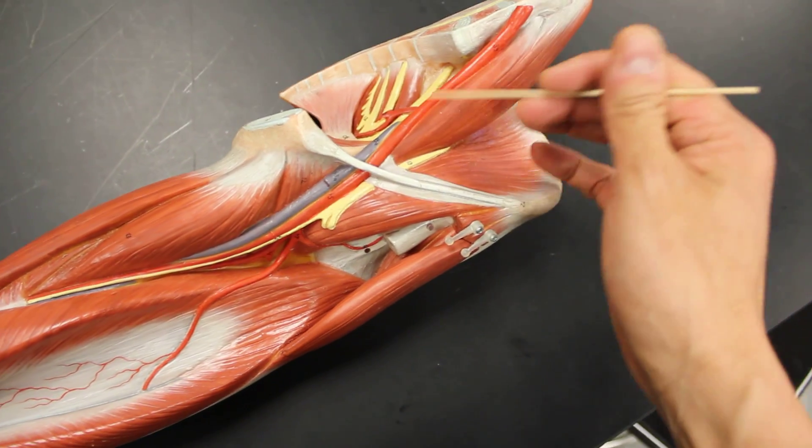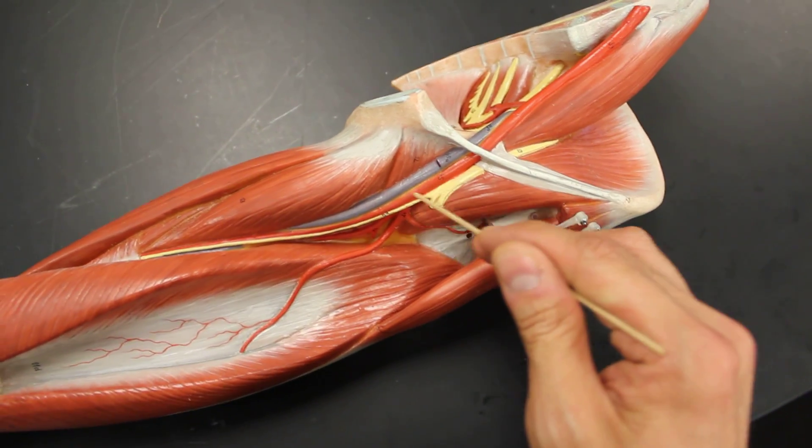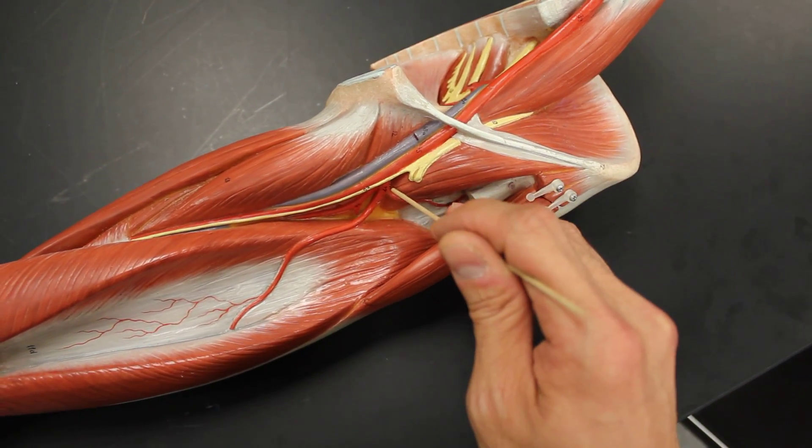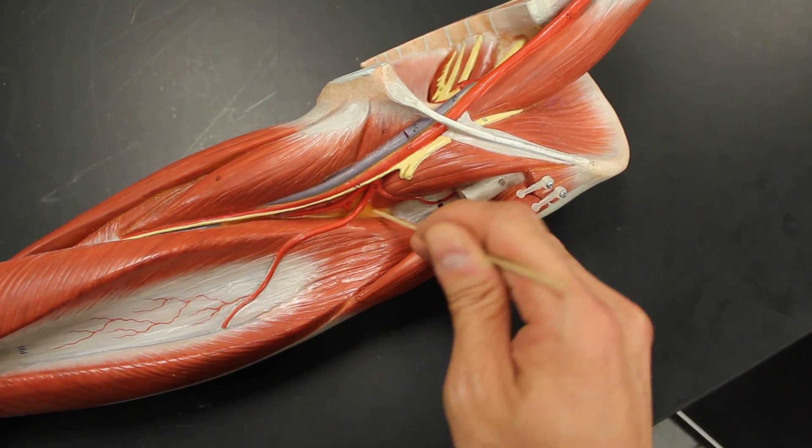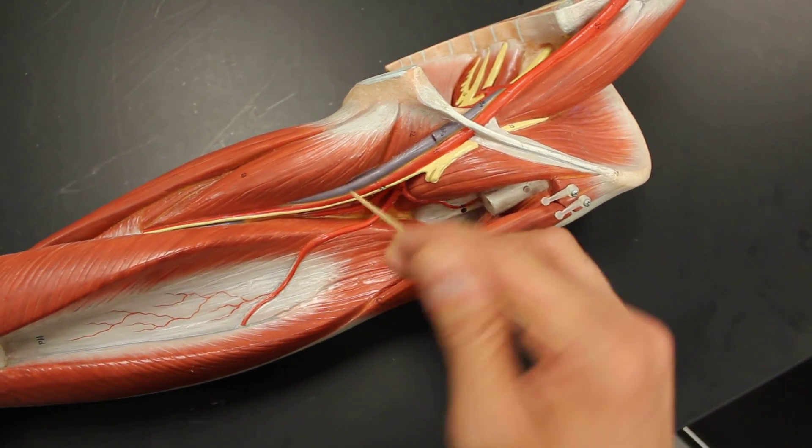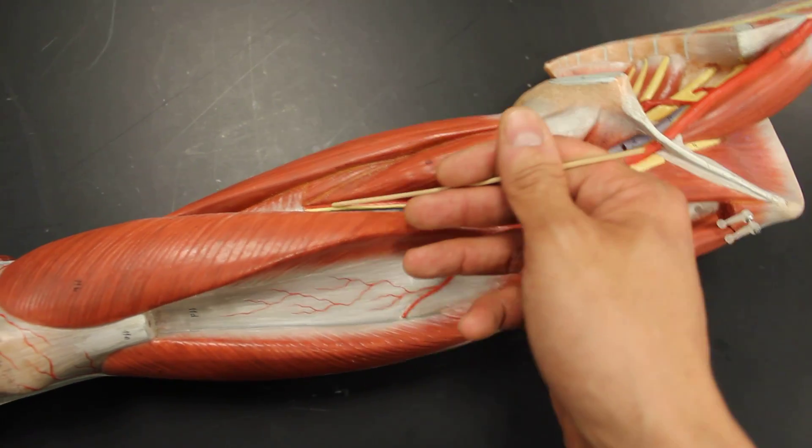Once we go into the external, once it crosses the inguinal ligament, it becomes the femoral. And the femoral gives us one big branch called the deep femoral. You can see some of the branches off there. The femoral continues down the thigh.